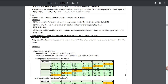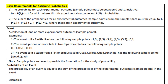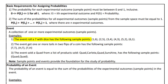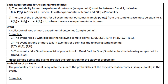Now let's go to page 6 of the PDF notes and talk about the basic requirements for assigning probabilities. Number one: the probability of each experimental outcome — the sample point — must be between 0 and 1 inclusive. Number two: the sum of the probabilities for all experimental outcomes from the sample space must equal 1. An event is defined as a collection of one or more experimental outcomes — sample points. For example, the event 'roll a 7 with dice' has 6 sample points.